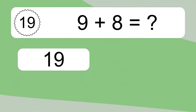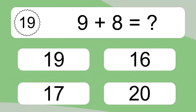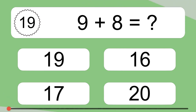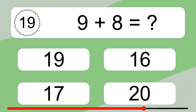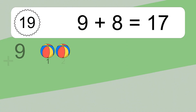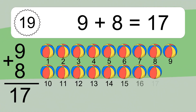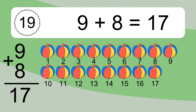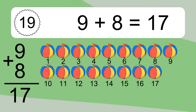Nine plus eight equals what? Nine plus eight equals seventeen. Let's count it: one, two, three, four, five, six, seven, eight, nine, ten, eleven, twelve, thirteen, fourteen, fifteen, sixteen, seventeen.